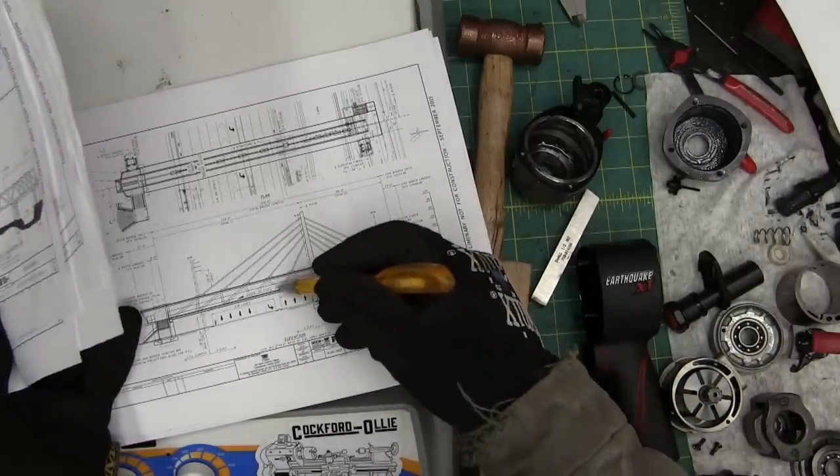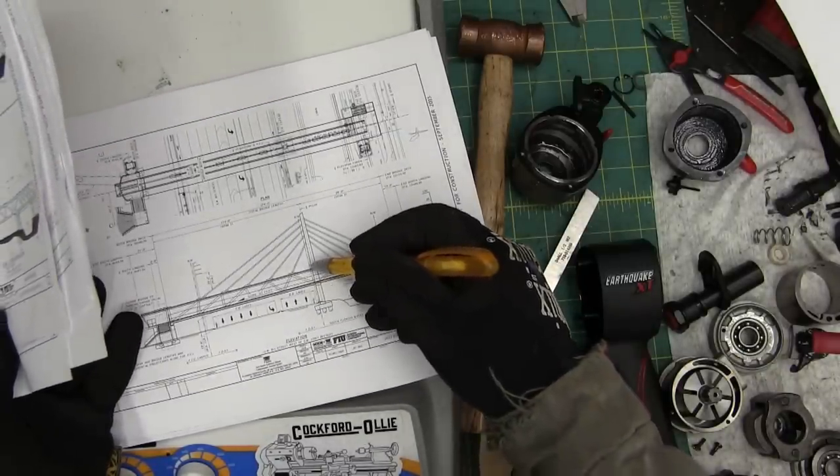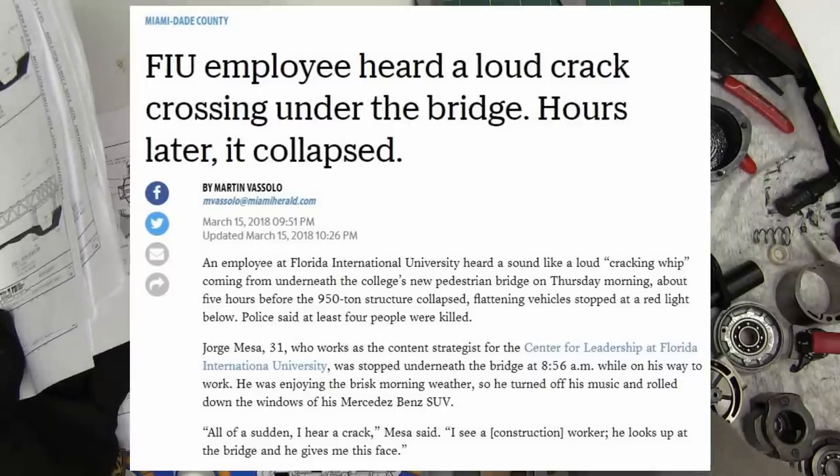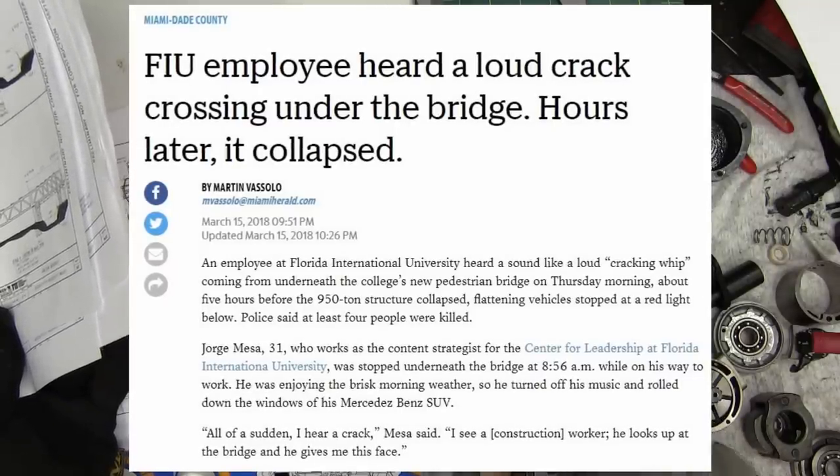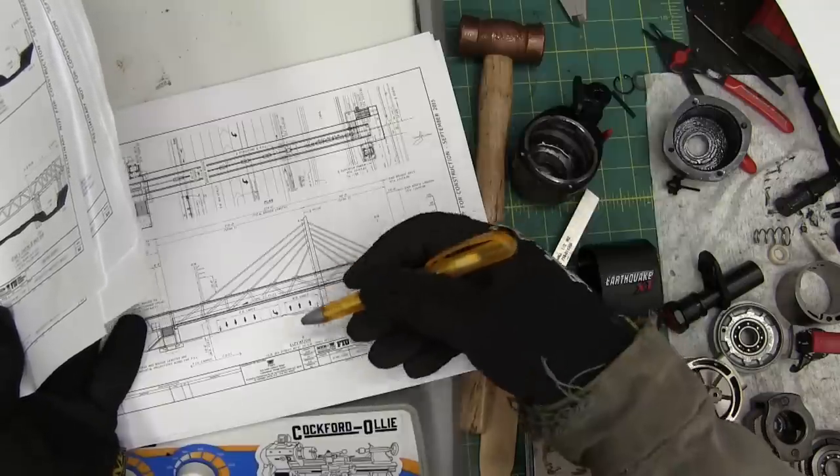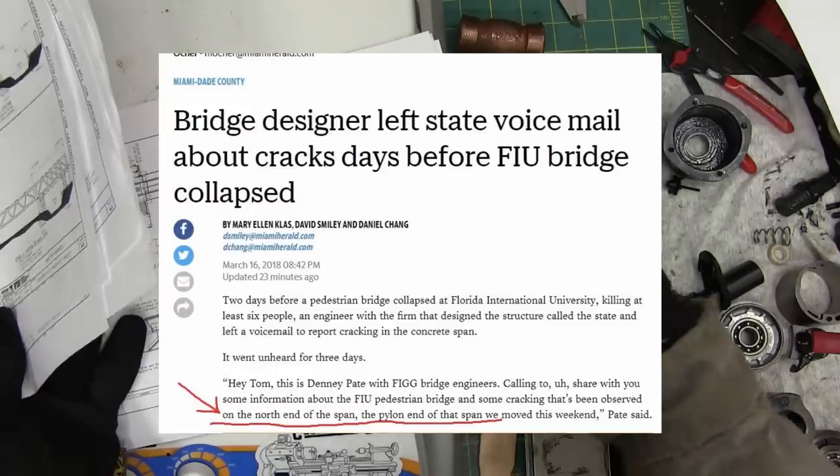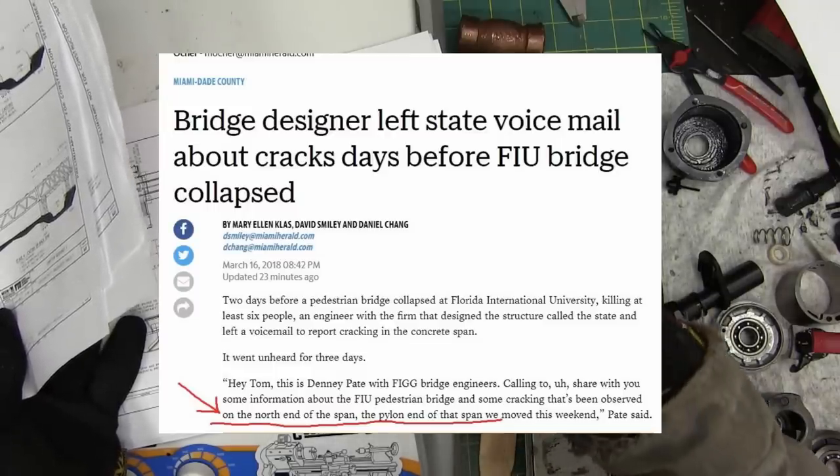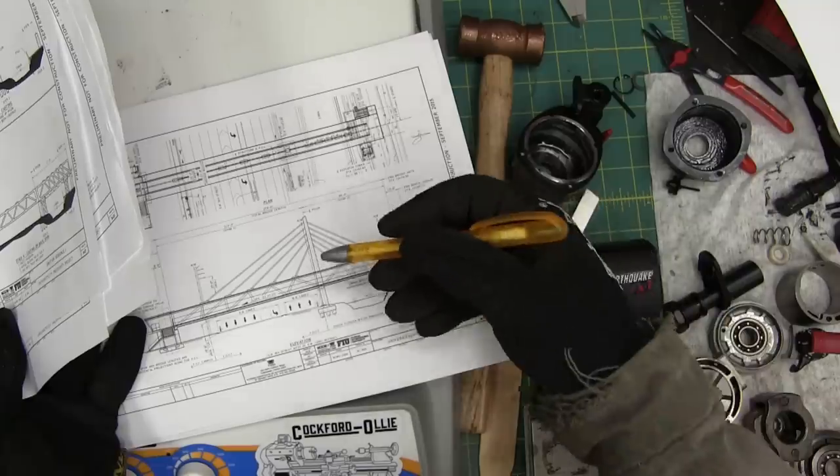So this bridge section had to have given a little bit prior to failure, and we know it gave a little bit prior to failure because it was reported in the news that the construction workers and a guy passing by who was an engineer somewhere else heard a bullwhip snapping.